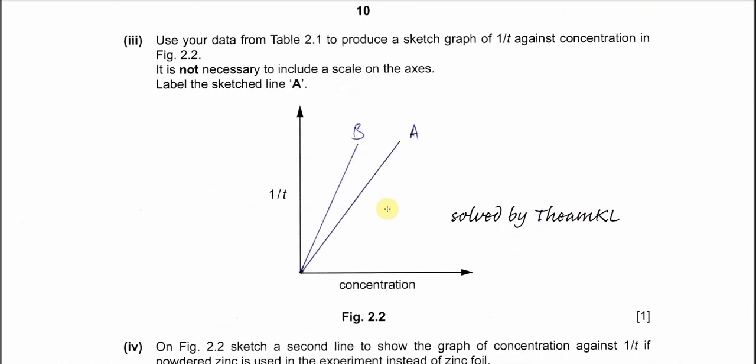Part 3. Use your data in table 2.1 to produce a sketch of rate against concentration in figure 2.2. It is not necessary to include the scale on the axis, so just label it. Draw one line from the origin, because concentration increased and rate also increased, so you just draw one straight line with positive gradient. Let's say A is here.